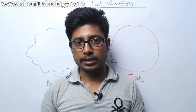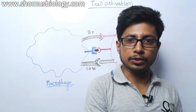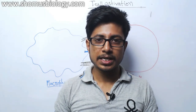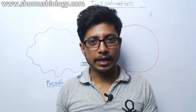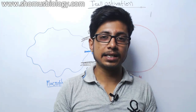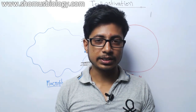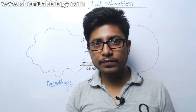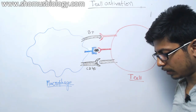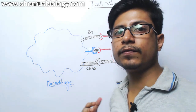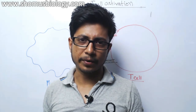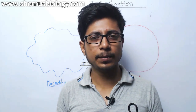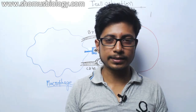There are two types of T cells: CD8 T cells and CD4 T cells. CD4 T cells are the T helper cells, while CD8 cells are known as cytotoxic cells which will kill diseased or infected cells. In this video, we will mostly be talking about the process of CD4 T cell activation, although the process of CD8 T cell activation is very similar.